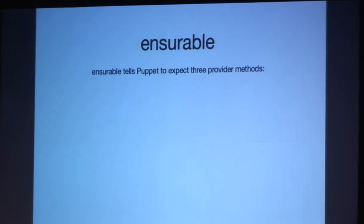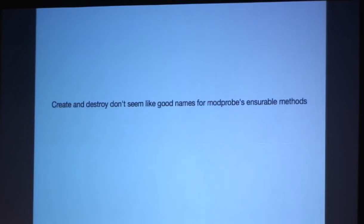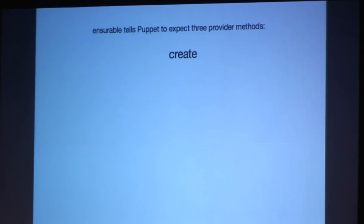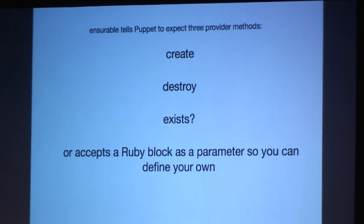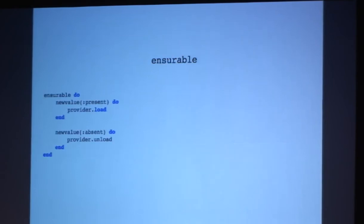So Ensurable actually tells Puppet to expect three provider methods. Those are create, destroy, and exist. I actually didn't feel like create or destroy worked with the modprobe nomenclature. So instead of create, destroy, and exist, you can also pass a Ruby block as a parameter. So you can actually define your own provider methods to use. So in the case of our provider, we went ahead and if Ensure is set to present, it'll actually use the load method from the provider. And if it's absent, it'll actually use the unload.